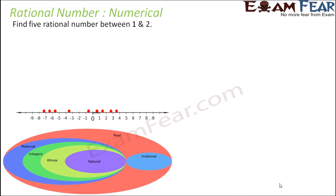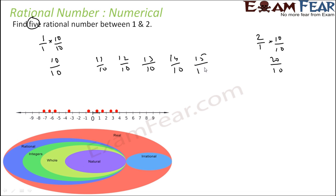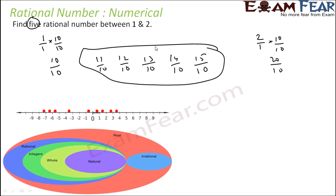If the question says find 5 rational numbers between 1 and 2, it's pretty easy. Write 1 and 2 in P by Q form and multiply both by 10 by 10 — because we need only 5 rational numbers. This gives 10 by 10 and 20 by 10. So we can write 11 by 10, 12 by 10, 13 by 10, 14 by 10, 15 by 10 — these are 5 rational numbers. You can pick any of these; this is not the only answer, since there are infinitely many rational numbers between any two rational numbers.